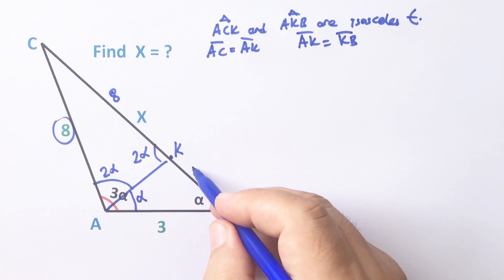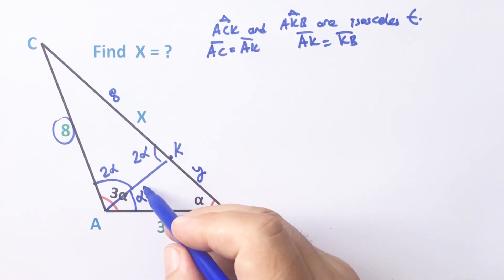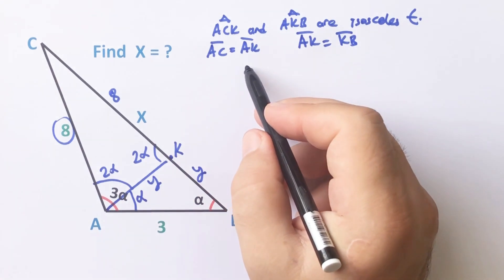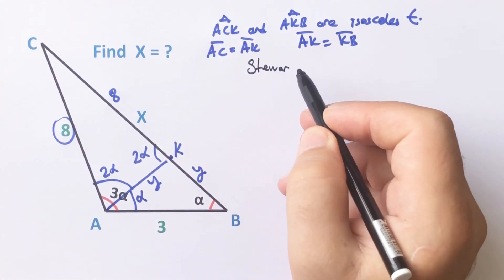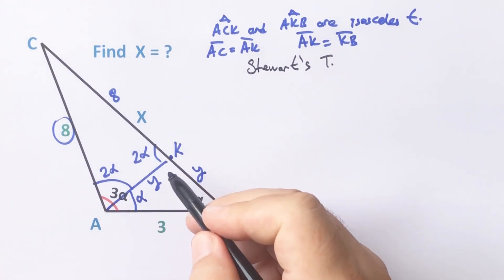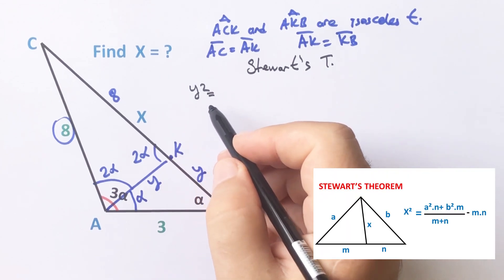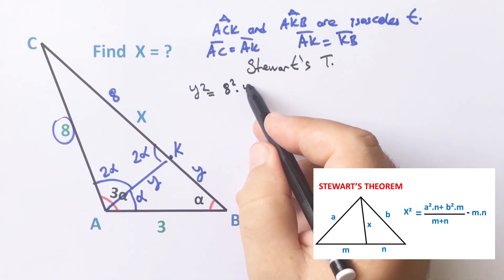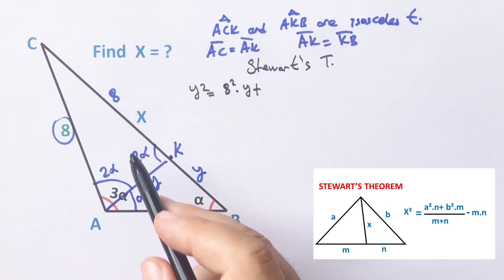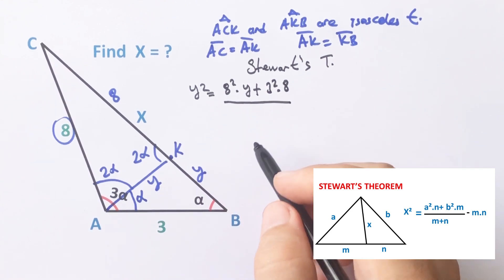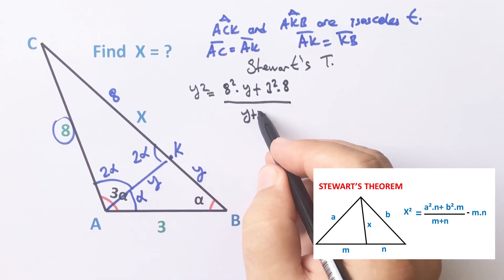And AK must equal KB. Let's call this y units, so this length must also equal y units. If we focus on the biggest triangle, we can apply Stewart's Theorem. According to Stewart's Theorem: y squared equals 8 squared times y plus 3 squared times 8, all over y plus 8.